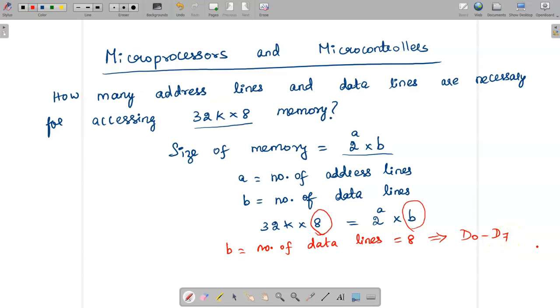This value 32k I have to represent as 2^a. How can we represent 32k? 32k means 32 is 2^5, and k is 2^10 (kilo). So 2^5 × 2^10 is 2^15.